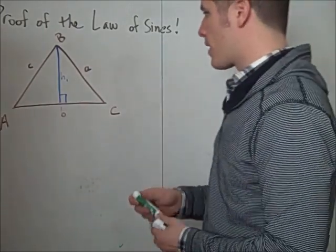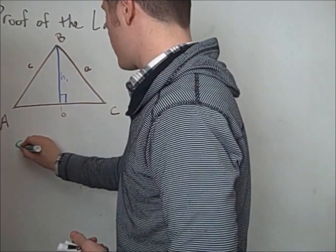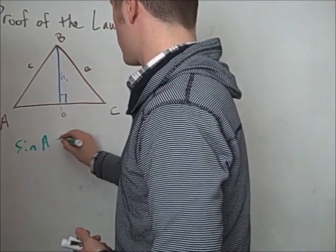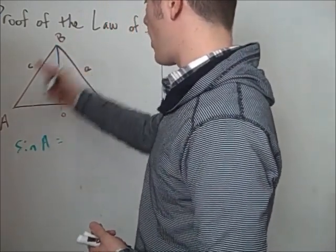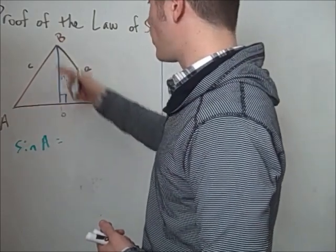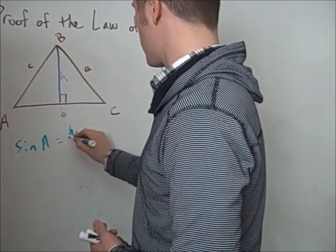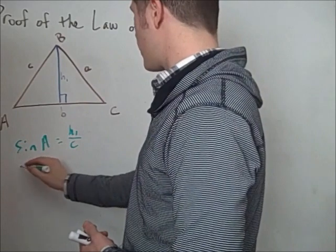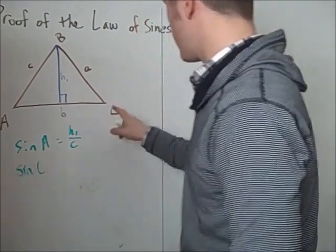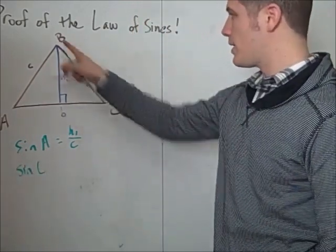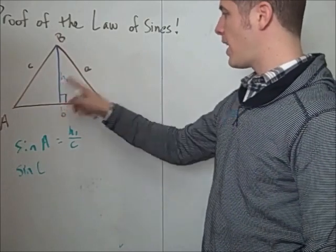Then we can see that the sine of A is opposite over hypotenuse for the right triangle, which is H1 over c. And the sine of C of this angle here, opposite over hypotenuse, equals H1 over a.